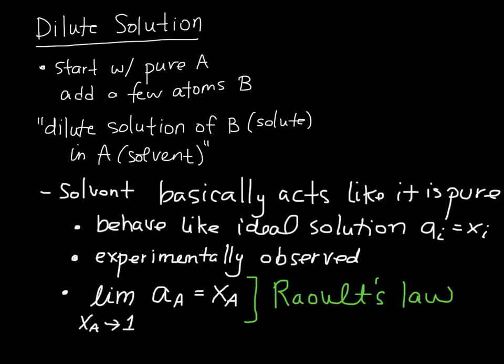So a synonym for saying that something is behaving like it is an ideal solution is actually to call it Raoultian. We will sometimes say that. So if it's Raoultian, that's the same as saying that it's an ideal solution. So let's take a look at then a plot of activity.